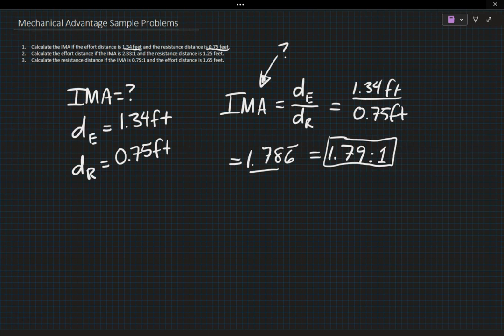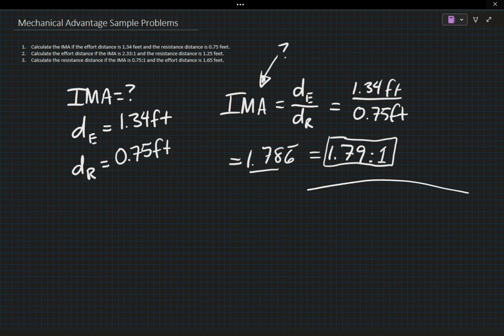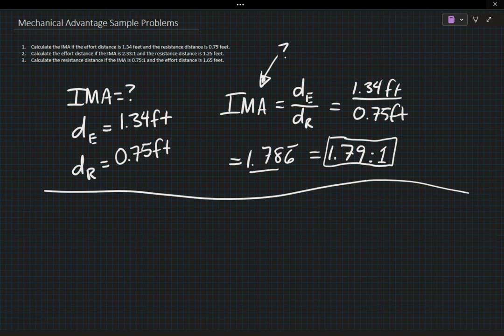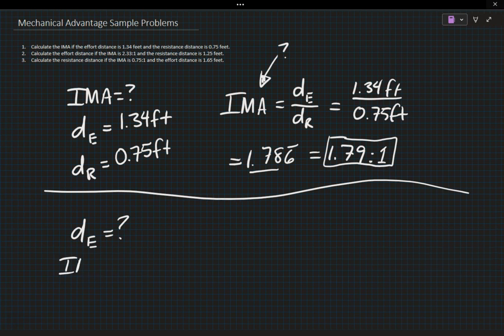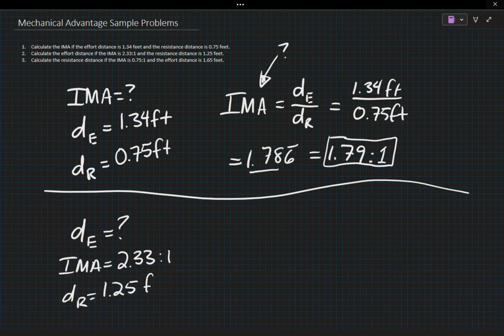The second problem says that we are calculating the effort distance if the IMA is 2.33 to 1 and the resistance distance is 1.25 feet. Same deal. I'm going to solve this problem in the same process that I did before. We're going to have to do a little bit more work here but I'm going to make my list. In this case I am looking for effort distance so DE is my unknown. IMA is given as 2.33 to 1 and our DR is 1.25 feet.